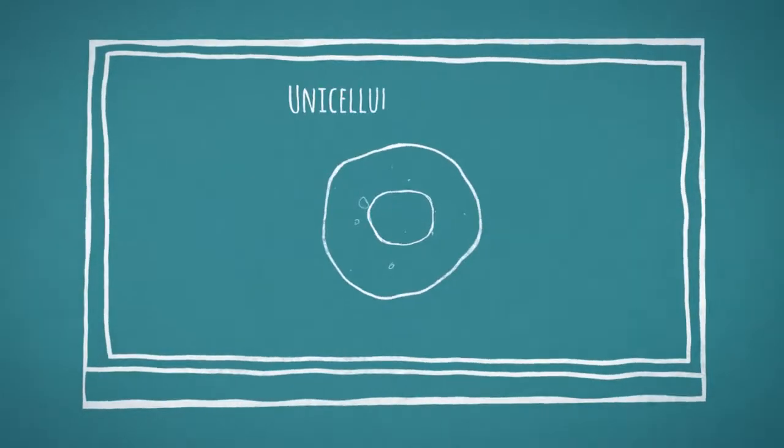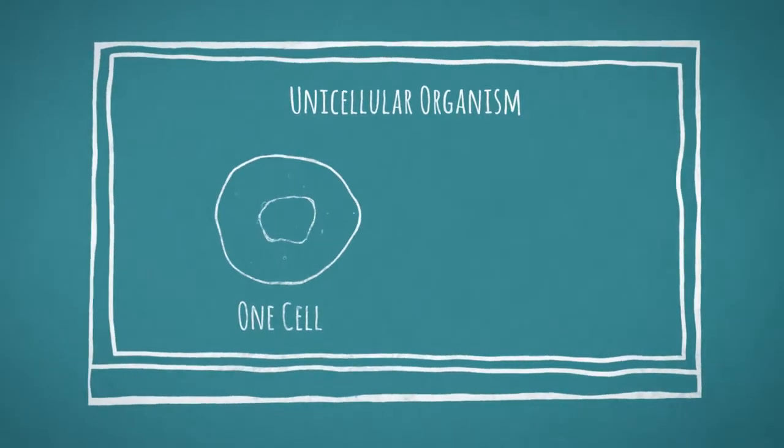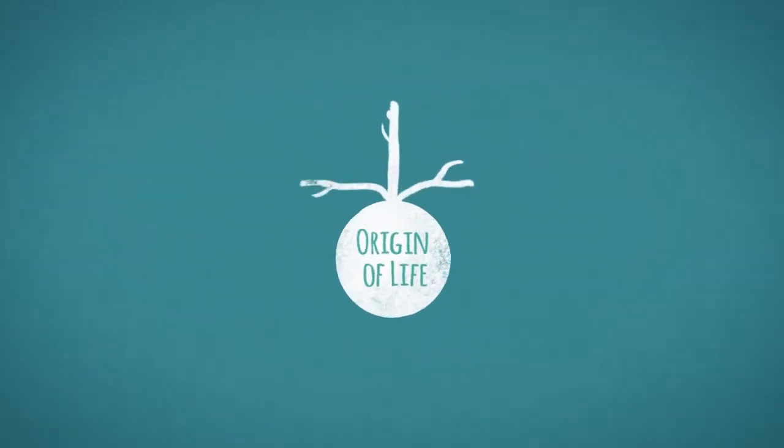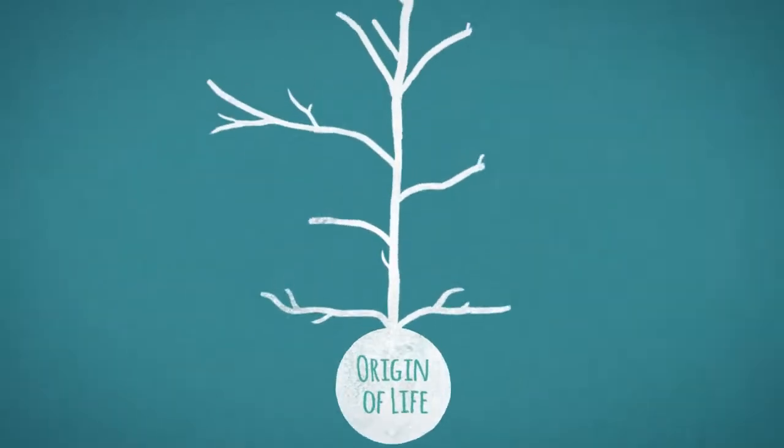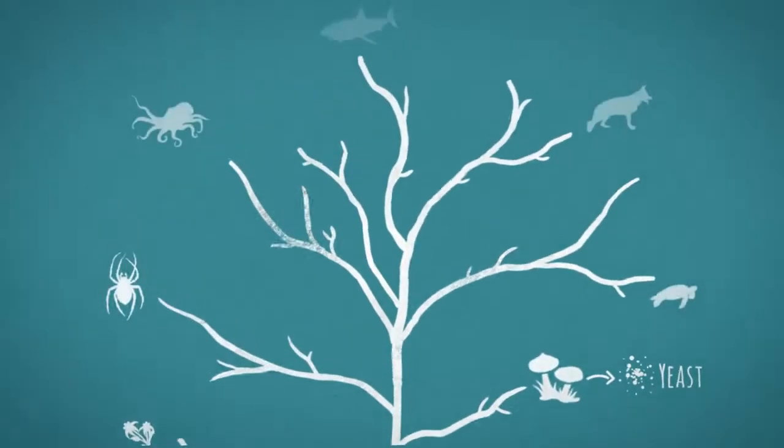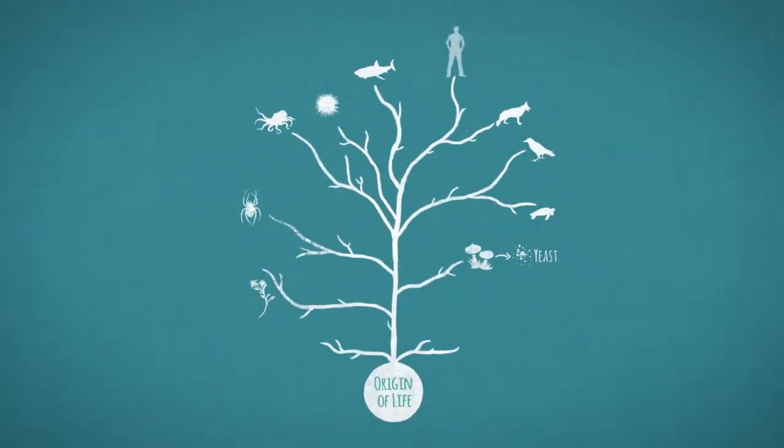Baker's yeast is a unicellular organism, meaning one cell is the whole organism. Many genes that extend lifespan in yeast also do so in worms, flies, and mice. So yeast aging, measured in one cell, is a model for aging of organisms much larger than yeast.